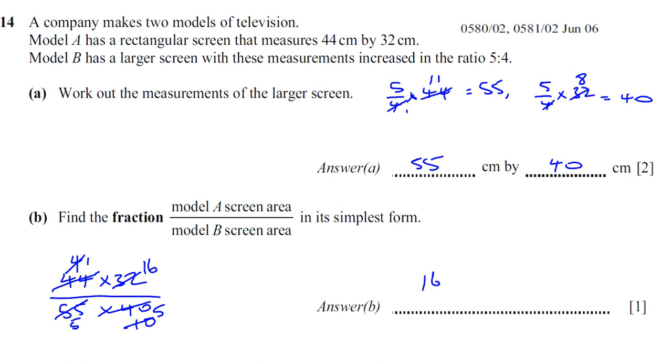A short way to do this would be: if you increase in the ratio 5 to 4, and you want to find model screen A over B, A is smaller than B, so you take the ratio 4 over 5.